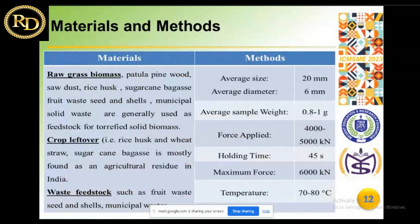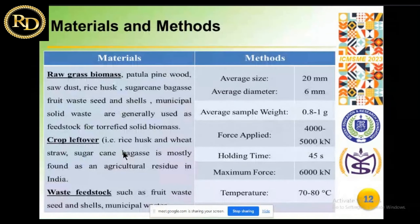The main focus of our presentation is the materials and methods. The raw biomass materials used include grass biomass, pitula, pine roots, sodas, rice, and sugarcane. Leftover crops such as straw, sugarcane, biogasses, crude waste, and municipal waste are also included. The average size used is 20 mm and 6 mm diameter, with a force applied of 4,000 to 5,000 kilo Newton and a holding time of 45 seconds.